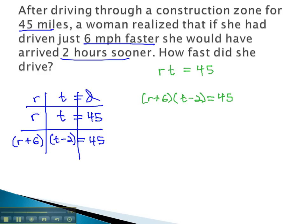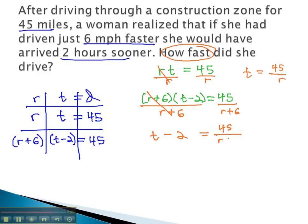In order to solve these equations, we divide by the factor we're looking for. The question's interested in how fast she drove, so we will divide by the rate. Dividing the first equation by the rate tells us that time is equal to 45 over r. Dividing the second equation by the rate factor, or r plus 6, tells us that time minus 2 is equal to 45 over r plus 6.